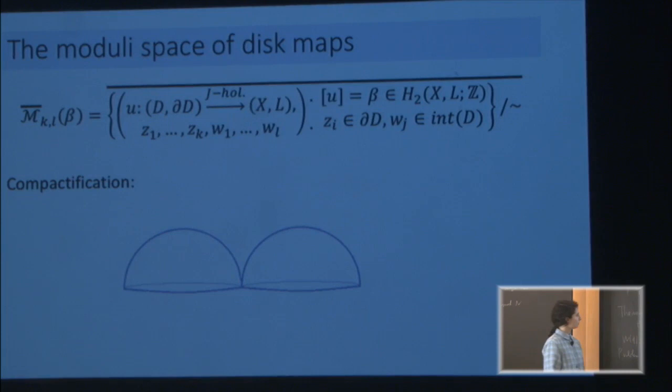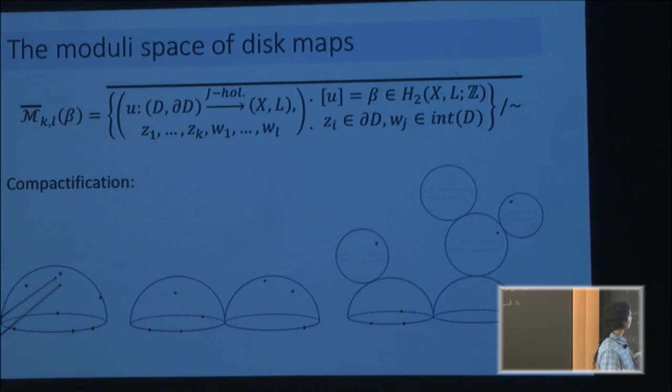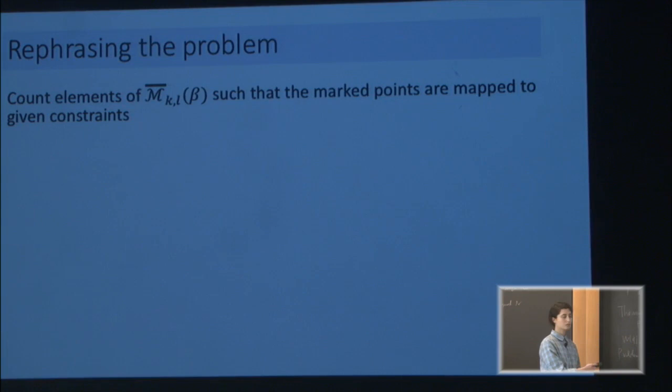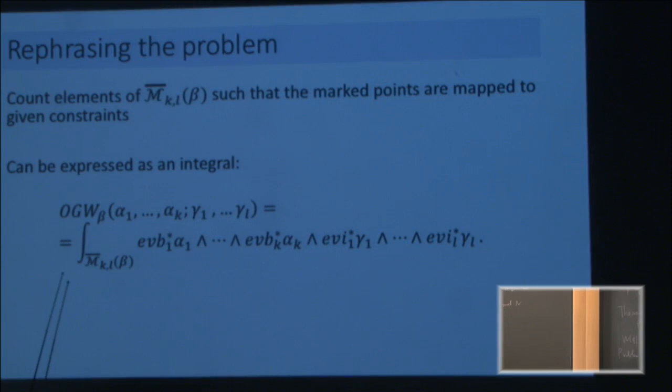So this real boundary node actually adds to the topological boundary of the moduli space. A typical element may be a disk with boundary marked points Z1, Z2, Z3, Z4, and interior marked points W. This may bubble at the interior, at the boundary, maybe both, maybe in many ways. We can rephrase the problem of counting curves as counting elements of the moduli space whose marked points are mapped to the constraints. The integral has constraints for where the boundary points should go and where the interior points should go.